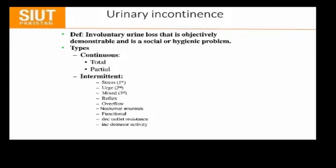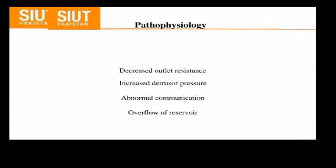As already known, urinary continence — going to its types — the four-F model tells us. There are two basic types of urinary incontinence: continuous type and intermittent type. The continuous type includes total and partial, and the intermittent type includes stress urinary incontinence, which is very important, overflow incontinence, nocturnal incontinence which is out-of-resistance or increased intra-abdominal pressure activity. The pathophysiology is that it is out-of-resistance or increased pressure, or there is an enormous communication.